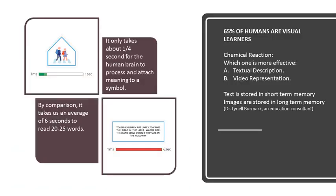It only takes about one-fourth a second for the human brain to process and attach meaning to a symbol. By comparison, it takes us an average of 6 seconds to read 20 to 25 words. 65% of humans are visual learners.